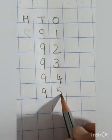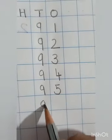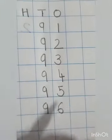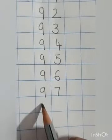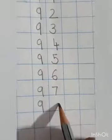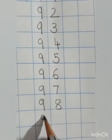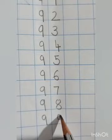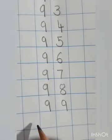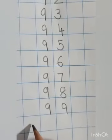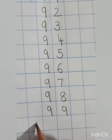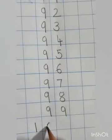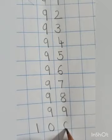9, 5, 95. 9, 6, 96. 9, 7, 97. 9, 8, 98. 9, 9, 99 and then when 100 comes will you start writing from here? No. H for hundred. So, here it is written H for hundred. So, when you write 100 it means you will start from here. 1, 0, 0, 100.